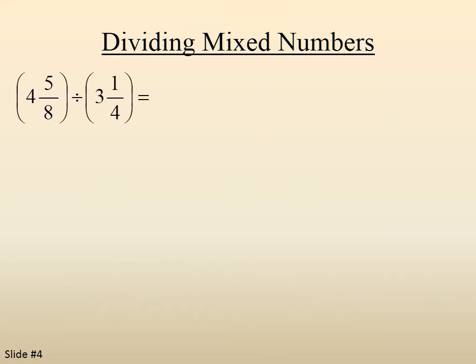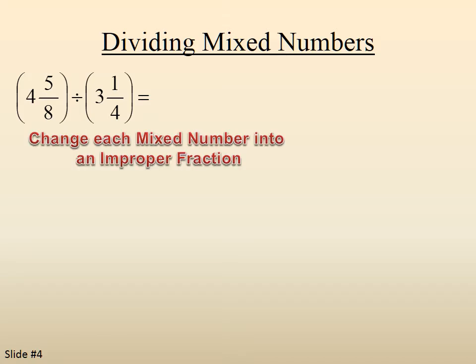4 and 5 eighths divided by 3 and 1 fourths. We have to change each mixed number to an improper fraction. So 4 and 5 eighths becomes 37 eighths. 3 and 1 fourths becomes 13 fourths.